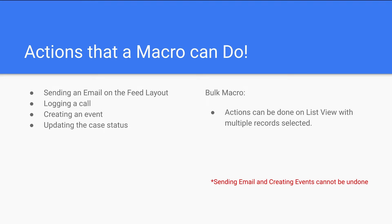There are certain set of actions that a macro can do: sending an email, logging a call, creating an event, and updating the case status. Users can use these instructions to create a macro. There is also a bulk macro feature which runs on multiple records at the same time. Users can use that on the list view page by selecting multiple records and running any macro they want. One consideration: any actions that have a submit action cannot be reversed — users should keep that in mind.